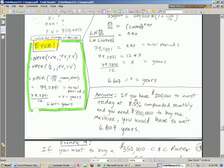The answer is if you have $200,000 to invest today at 8.5% compounded monthly, and you need $350,000 to buy the machine, you would have to wait about six and a half years.